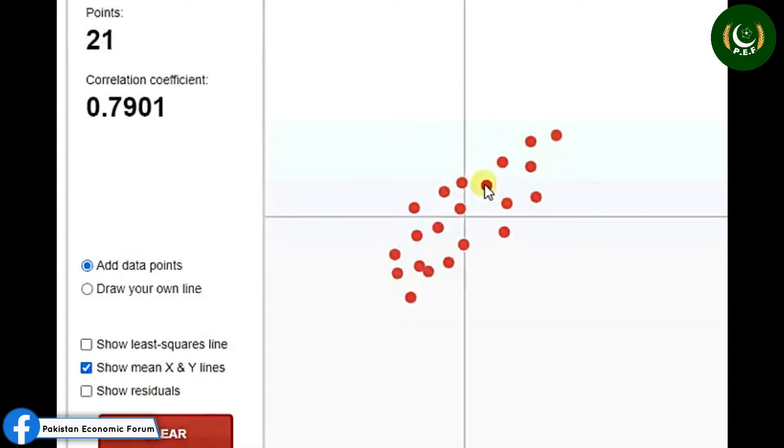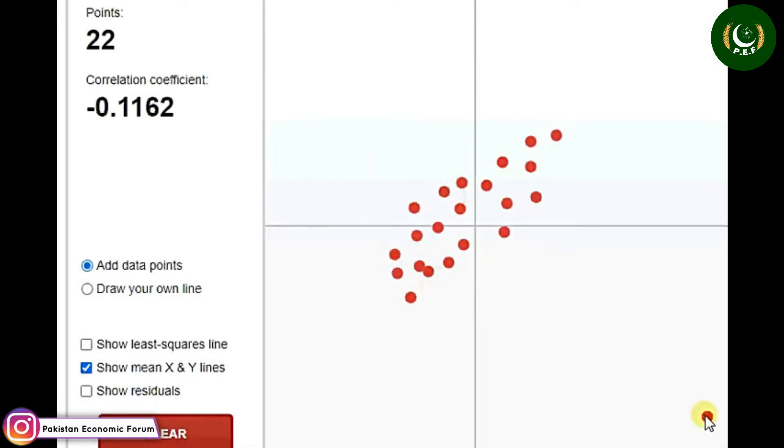This is 0.7901. If we have a single outlier here, you see correlation becomes almost 0.11 and it becomes negative. Correlation is very sensitive to outliers. Why? Because correlation is based on bivariate normal distribution.